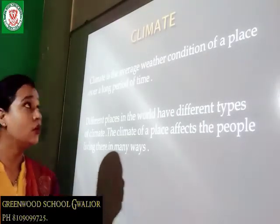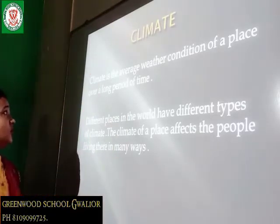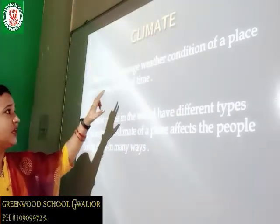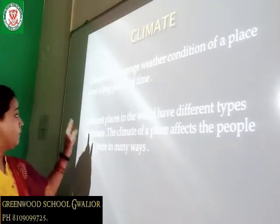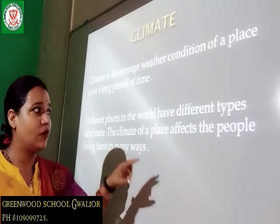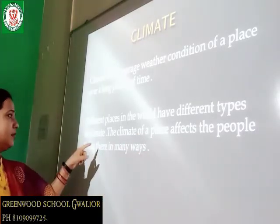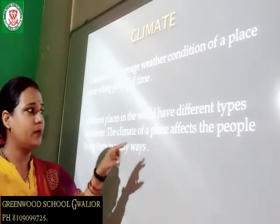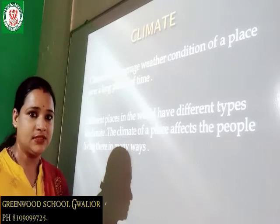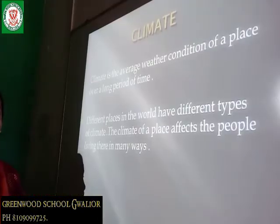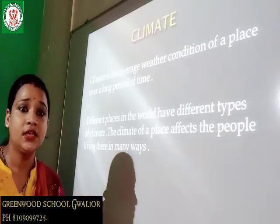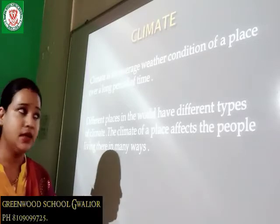Your next topic is: what is climate? Climate is the average weather condition of a place over a long period of time. Different places in the world have different types of climate. The climate of a place affects the people living there in many ways, like the clothes they wear, the food they eat, and the places where they live.